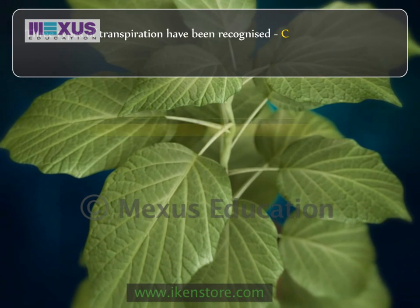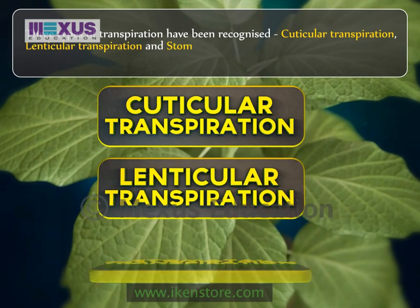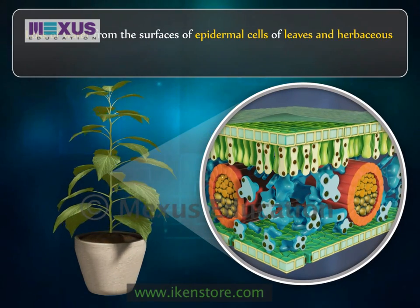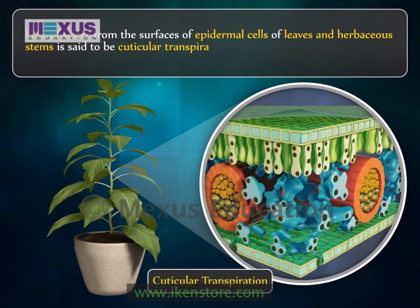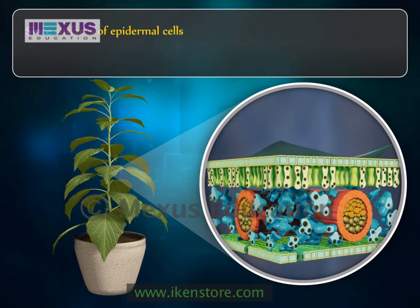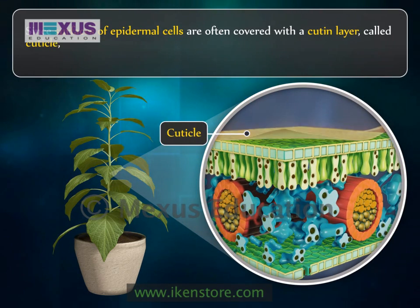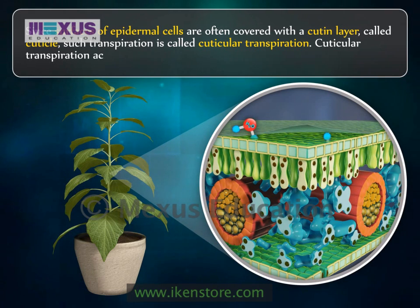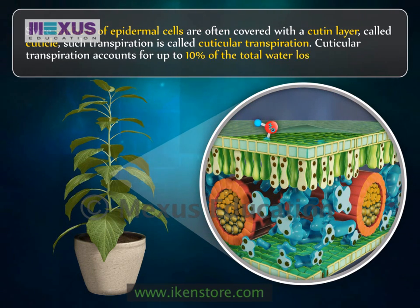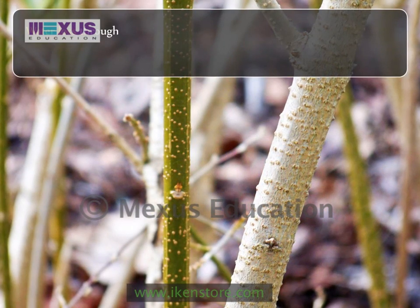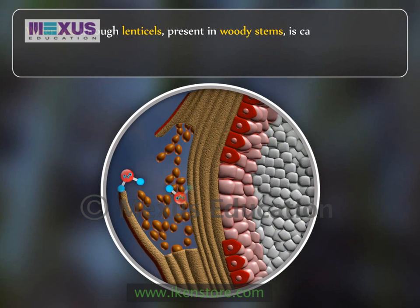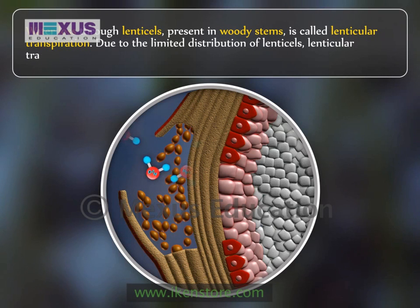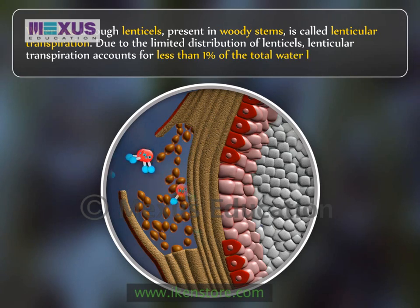Three types of transpiration have been recognised: cuticular transpiration, lenticular transpiration, and stomatal transpiration. Loss of water from the surfaces of epidermal cells of leaves and herbaceous stems is cuticular transpiration. Since surfaces of epidermal cells are often covered with a layer called the cuticle, such transpiration is called cuticular transpiration. Cuticular transpiration accounts for up to 10% of the total water loss by the plant. Water loss through lenticels present in woody stems is called lenticular transpiration. Due to the limited distribution of lenticels, lenticular transpiration accounts for less than 1% of the total water loss.